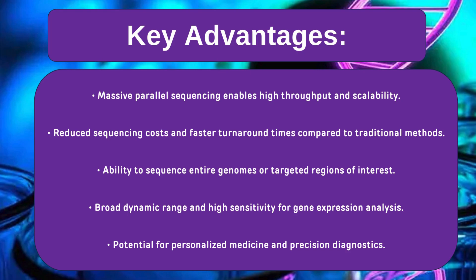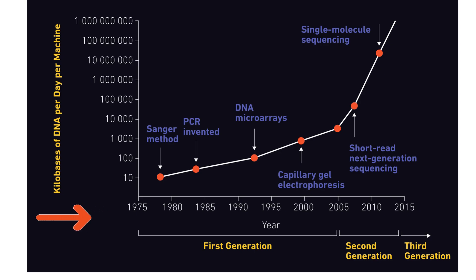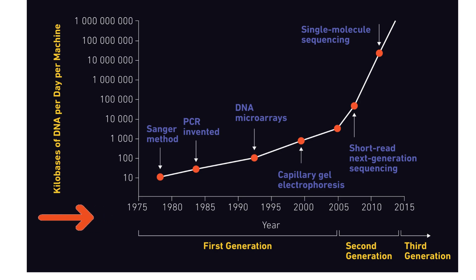This is a statistical visualization of the evolution of DNA sequencing throughput over time. We can see how first generation sequencing gives low throughput, then second generation shows a significant increase in throughput, and finally third generation sequencing shows a further boost in throughput.